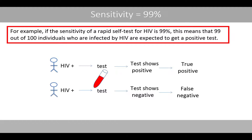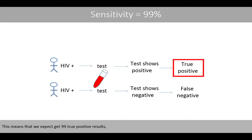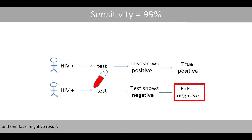For example, if the sensitivity of a rapid self-test for HIV is 99%, this means that 99 out of 100 individuals who are infected by HIV are expected to get a positive test. This means that we expect to get 99 true positive results and one false negative result.